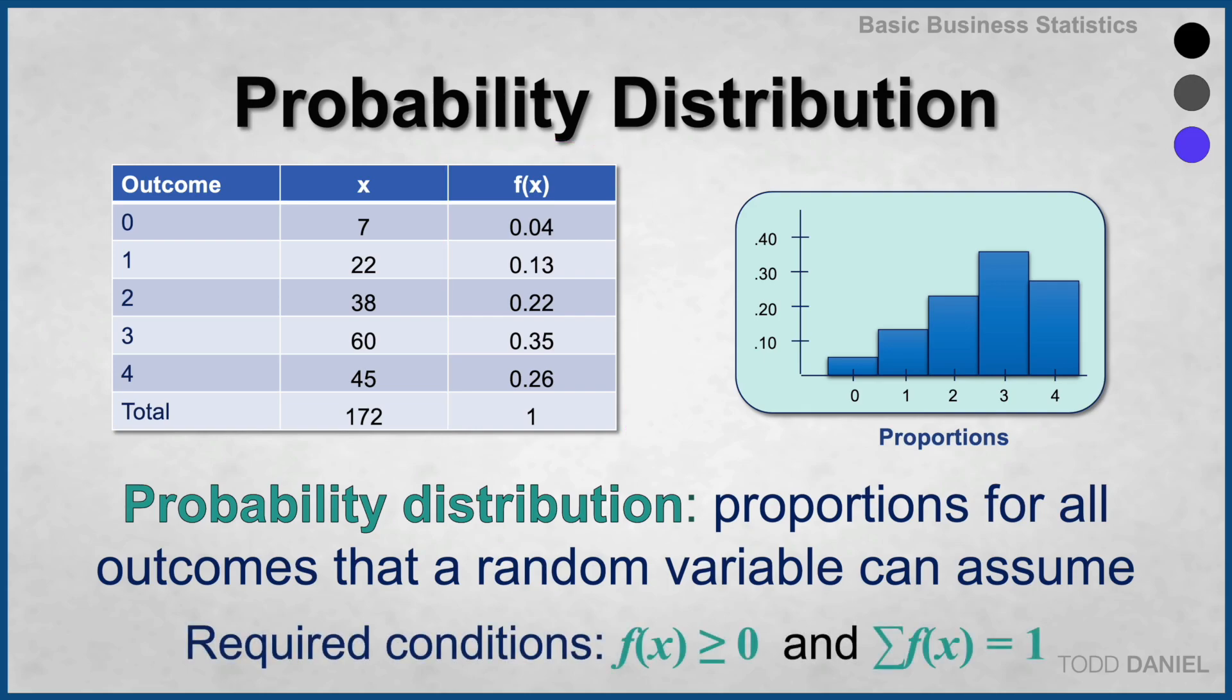There are two required conditions for probability distributions. Every individual probability must be greater than or equal to 0, and the sum of all of the probabilities must add up to 1.